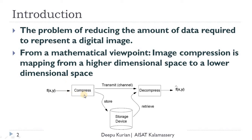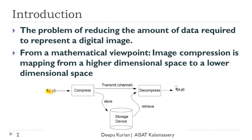In general, we can represent the compression process using a diagram where f(x,y) represents the original uncompressed image. When it is passed to a compression algorithm, it compresses that image. The major applications of compression are in transmission as well as storage. Employing compression for transmission increases the transmission rate; employing it for storage reduces the storage size required. We get back an estimate of the actual image, f-cap of x,y, after passing through a decompression algorithm. This is the general framework of image compression techniques.